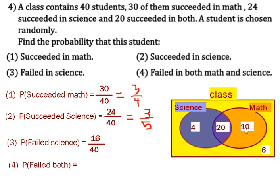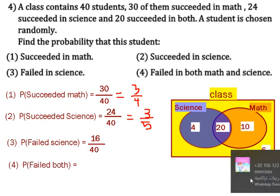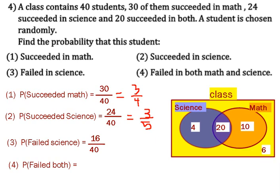The number of students outside these two circles will be 6, then it will be 6 divided by 40.